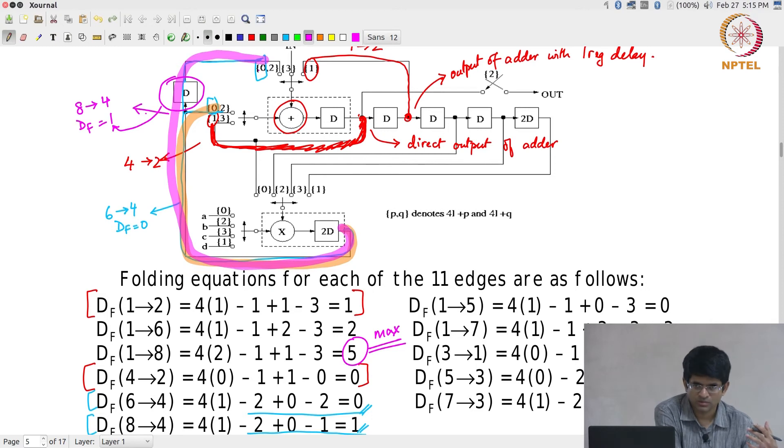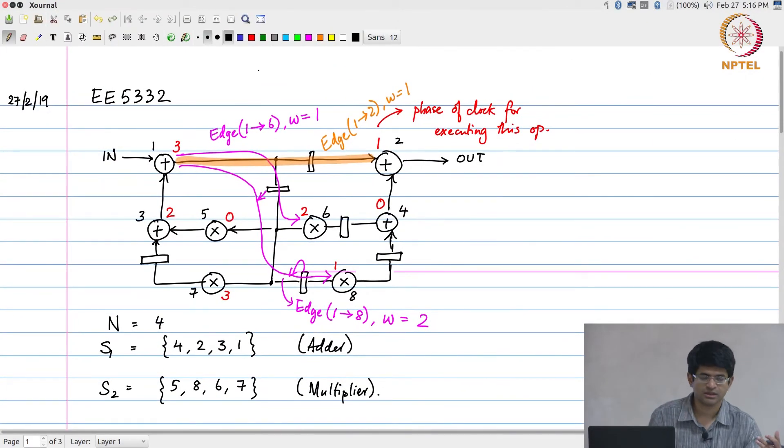This should tell you that the procedure that you can follow in order to get a folded architecture is fairly straightforward. You start off with your data flow graph, you determine the different folding schedules at which time instants those different operations need to be scheduled. Is that a very trivial thing to do? Not exactly. That is exactly where we are going next. That is what we are going to be looking at after this, but it can be done.